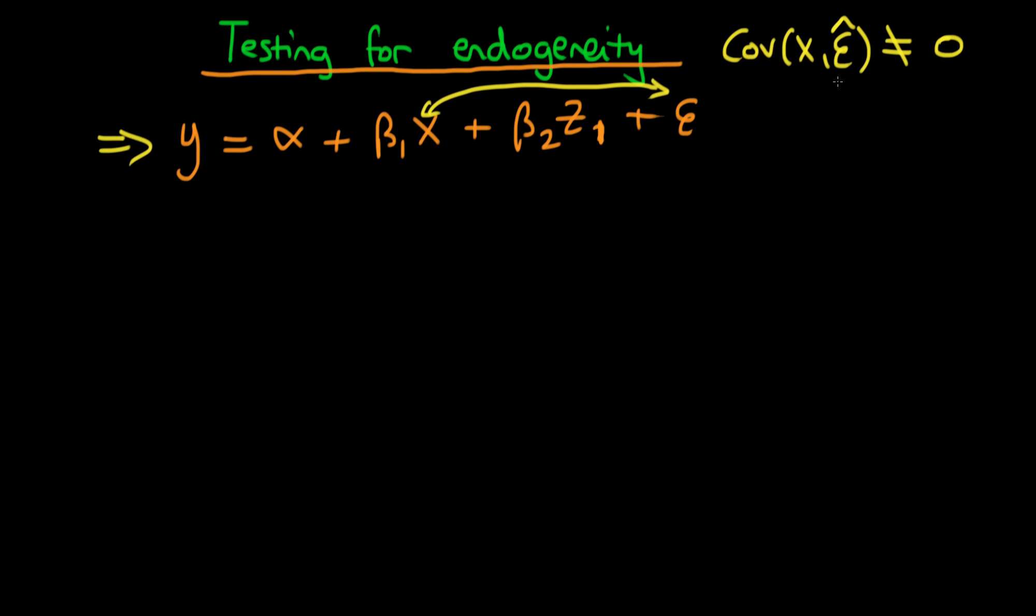Well, that would be fine if we actually knew what epsilon was. But when we use the estimated value of epsilon, which we get from running this regression, it's actually completely wrong. We can't use that as a measure of actually testing for whether or not x is endogenous because the estimated errors in these circumstances, if x is endogenous, will be incorrect. So this method at the top here doesn't actually lead to anything.